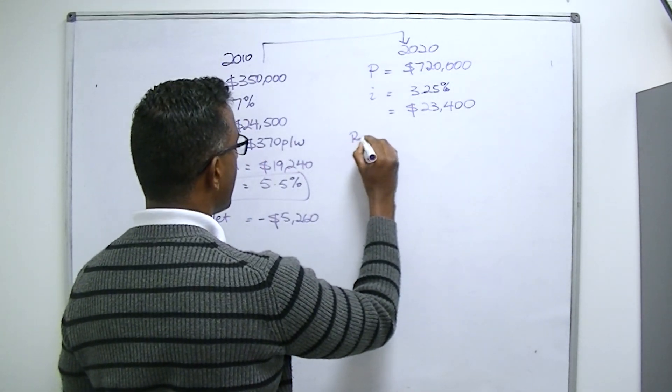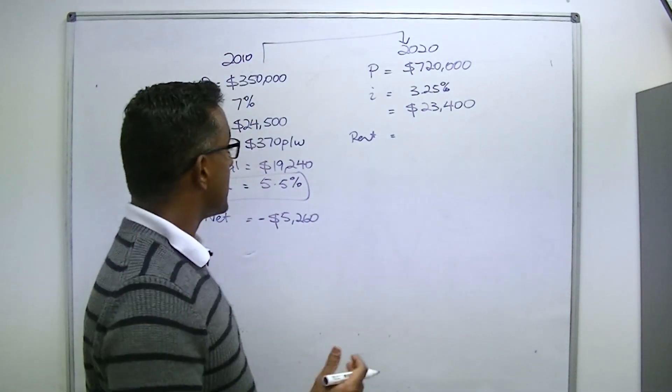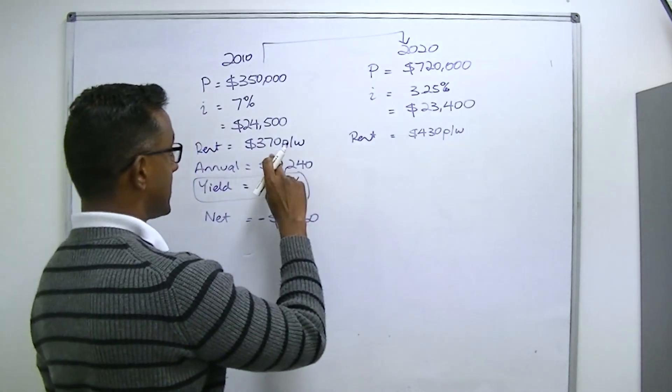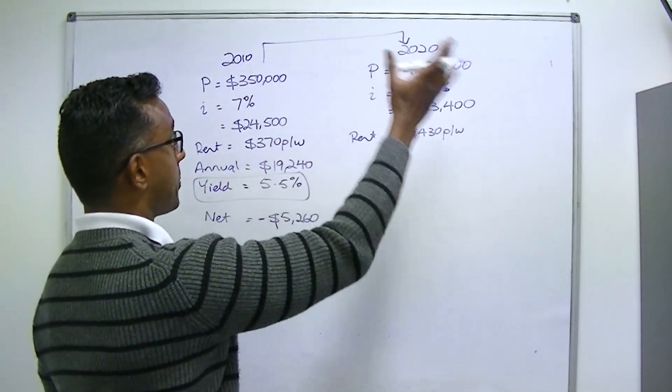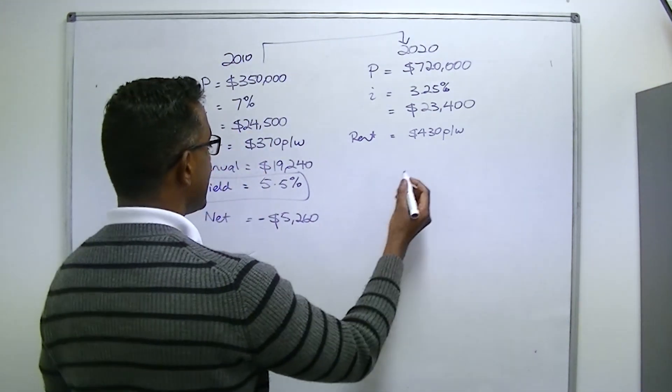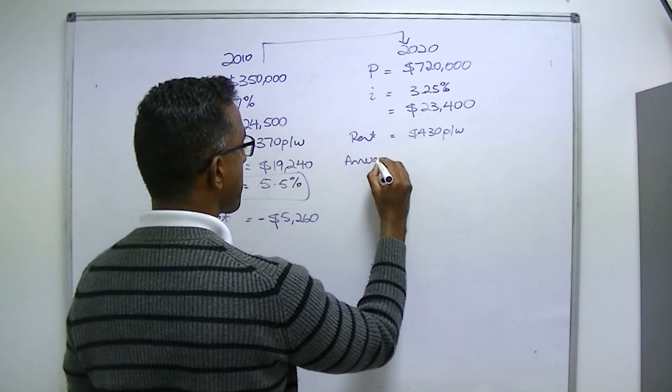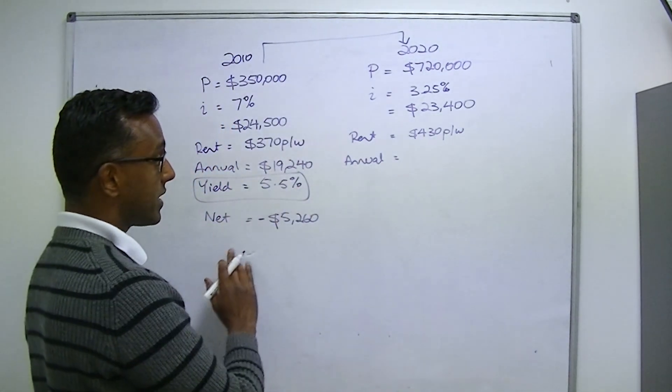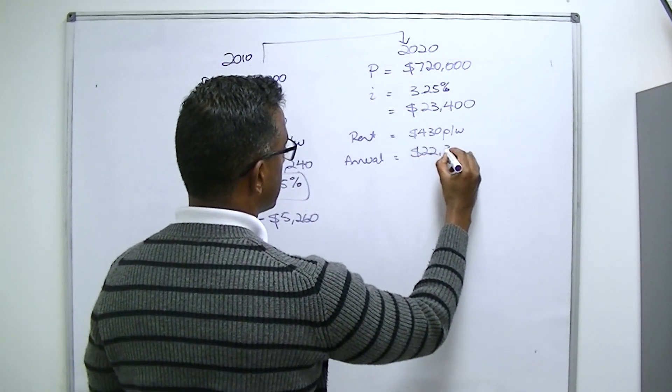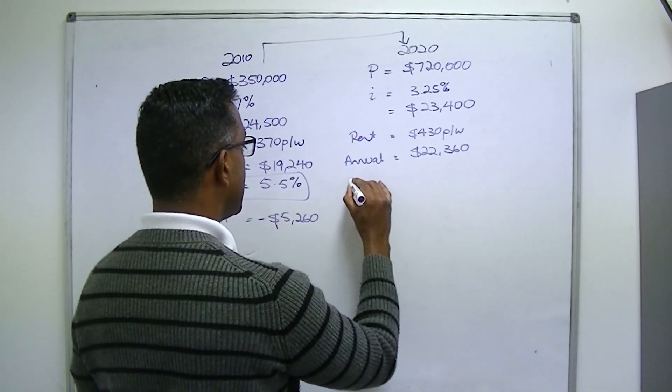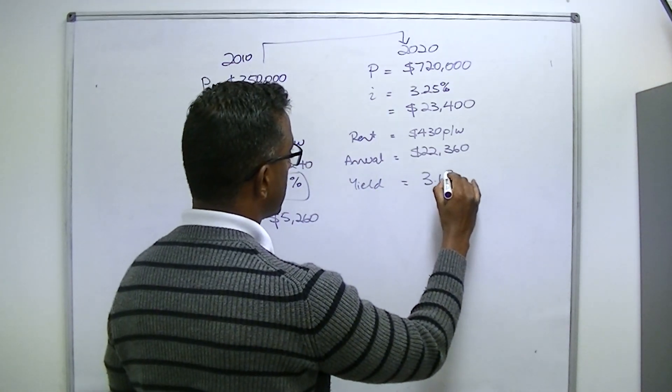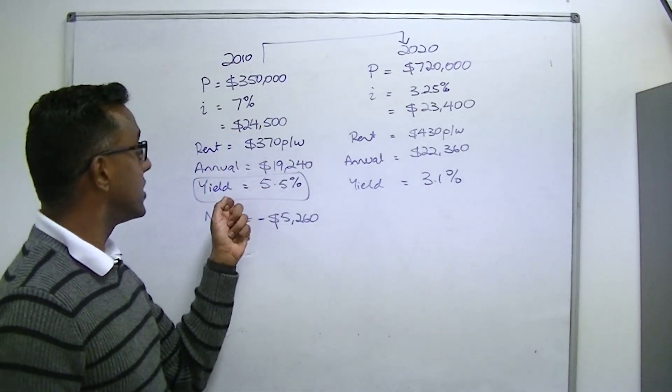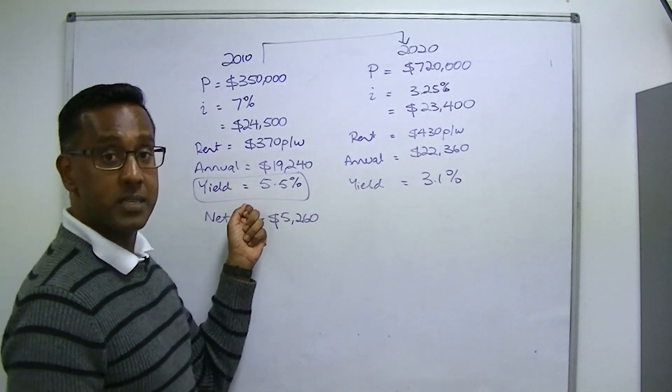We're not worrying about negative gearing here. We're not worrying about any depreciation. The property already at that time was about six or seven years old, so it lost most of its depreciation anyway, so we're just looking at the raw numbers. Now, let's fast forward 10 years to 2020. My client recently got their property valued, and the valuer valued it at $720,000. That's a bank valuation, which as I'm sure you know, they're often a little bit more conservative, which means that if my client was to actually sell this on the open market, they could probably get more than that, but let's just assume that's what they could sell it for.